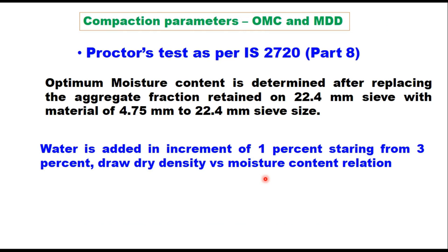Once the aggregates and fines are declared suitable, compaction parameters are determined — that is, optimum moisture content (OMC) and maximum dry density (MDD) — as per IS 2720 Part 8, heavy compaction in the proctor test. Generally aggregates of size less than 22.4 mm are used. When aggregate is larger than 22.4 mm, the fraction retained on the 22.4 mm sieve is replaced by material of 4.75 mm to 22.4 mm sieve size.